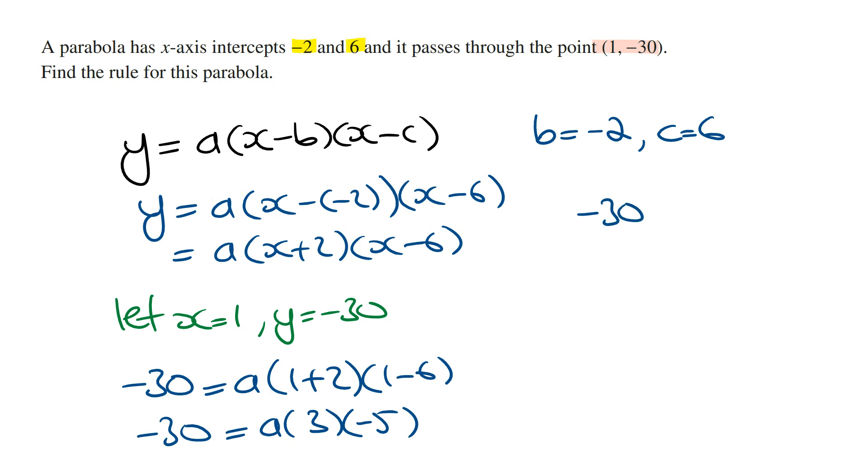Which means that -30 = -15a. And so solving for a, we're going to get a = -30 / -15, which means that a = 2.